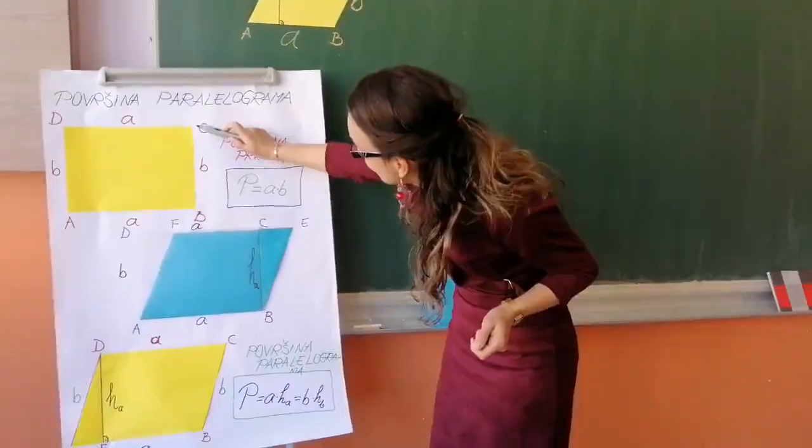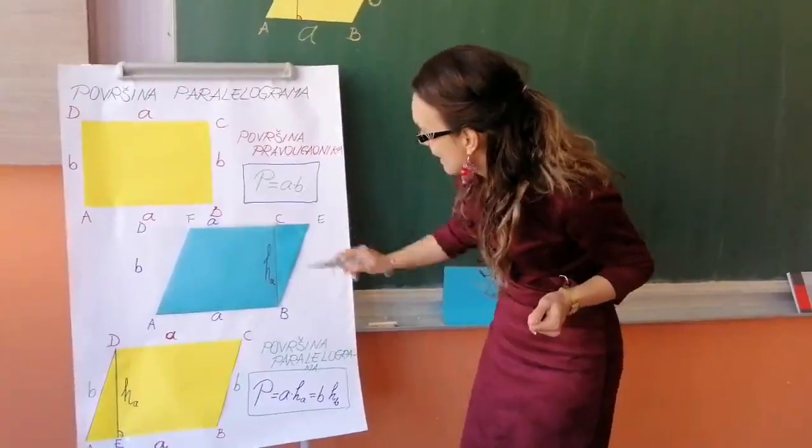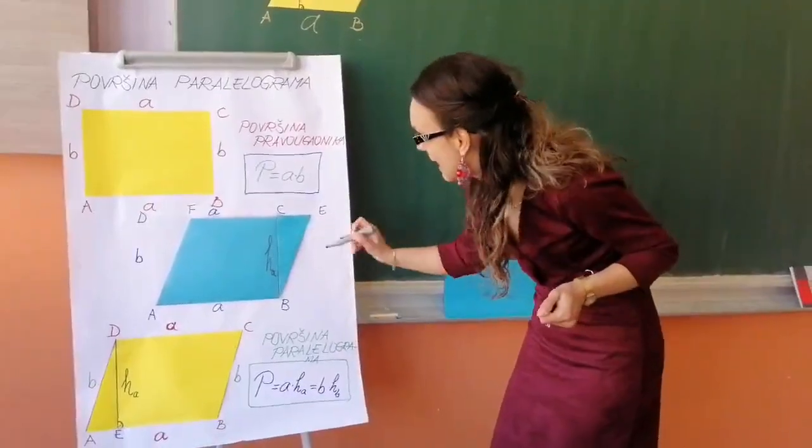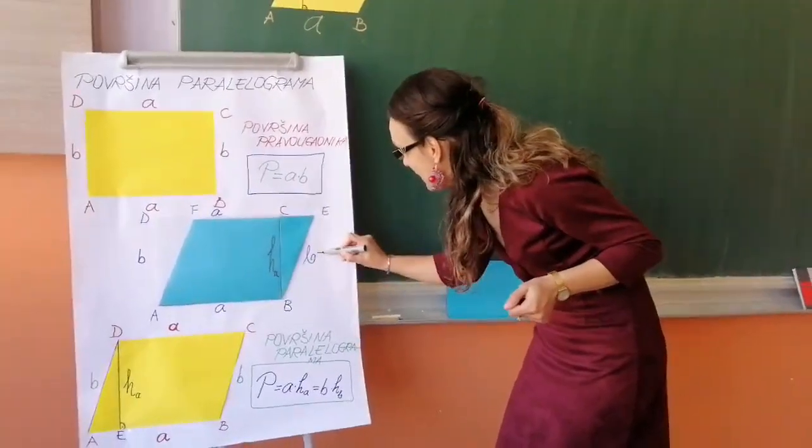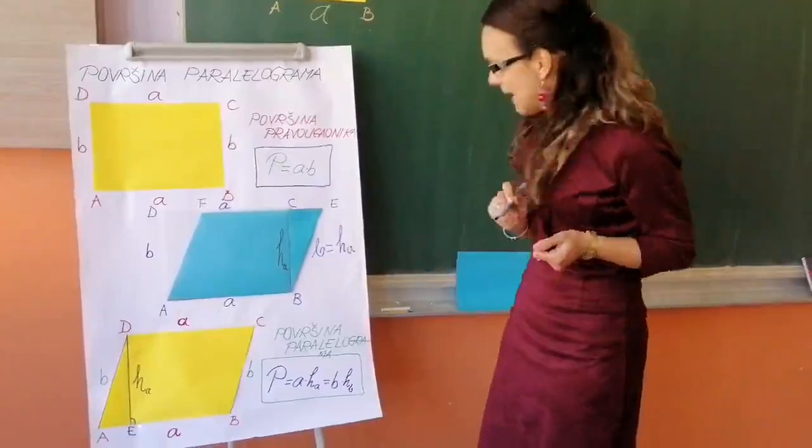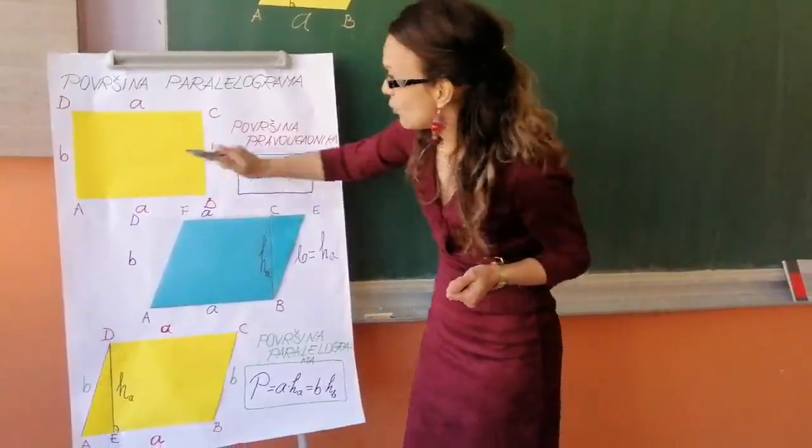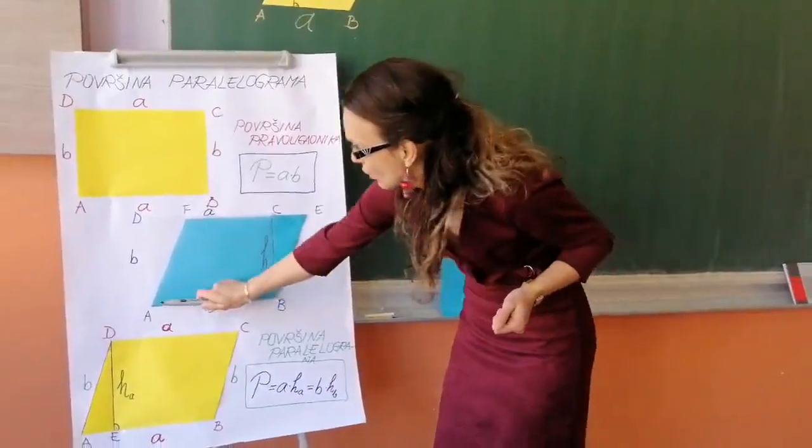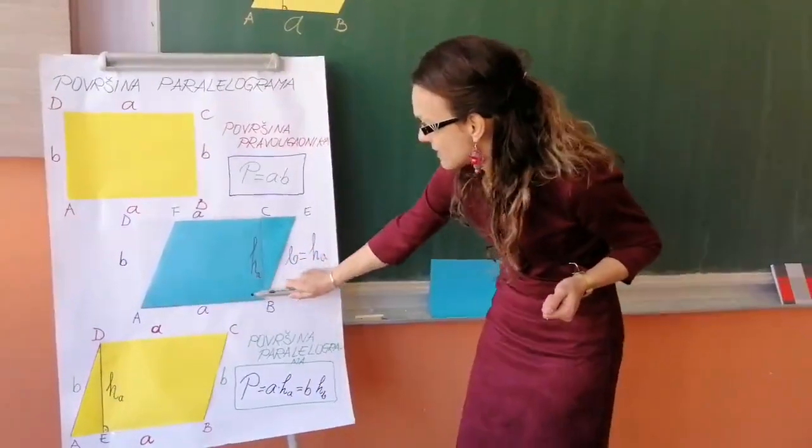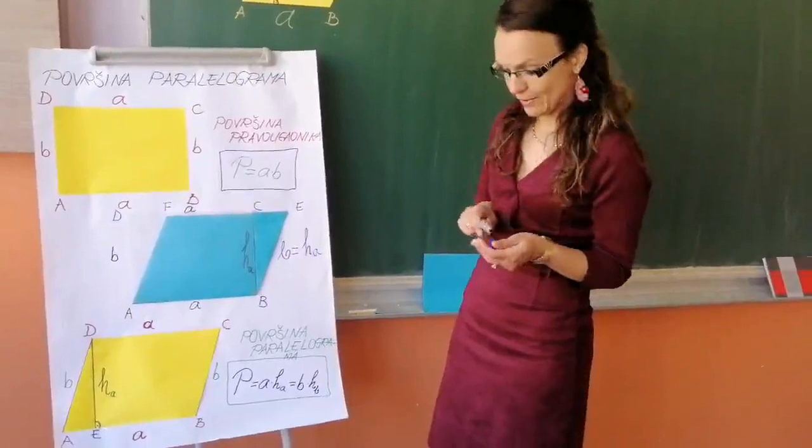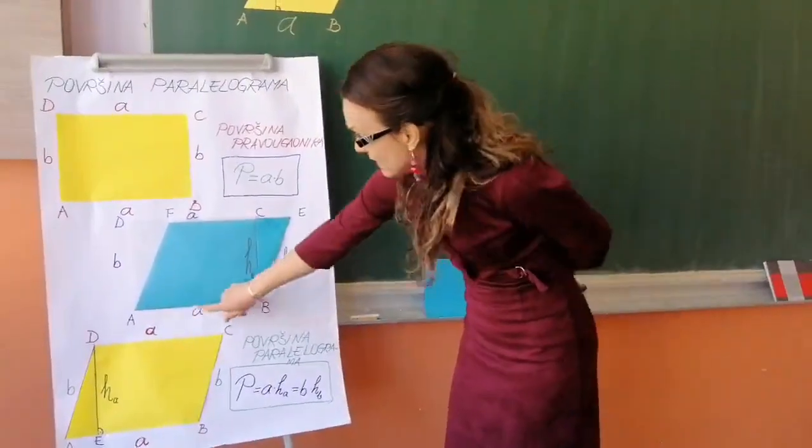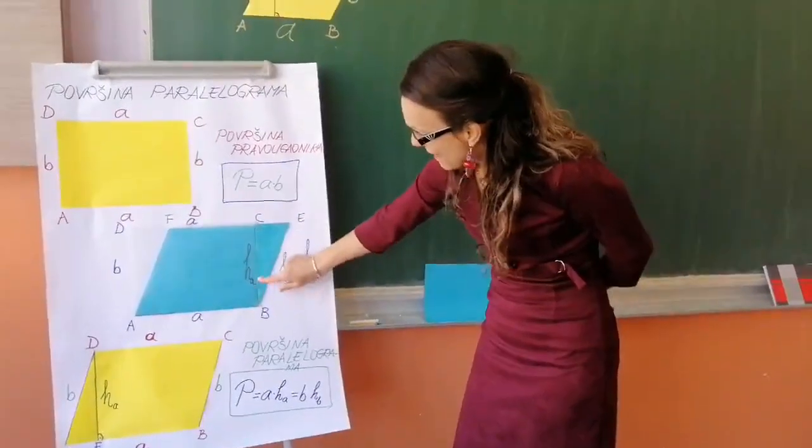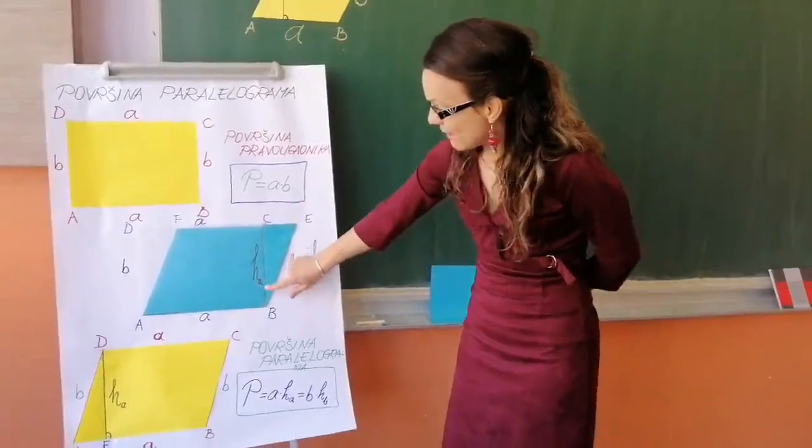Na način da stranica pravougaonika, malo B, odgovara mojoj visini ha, znači B je jednako ha, a druga stranica pravougaonika, malo A, odgovara mojoj stranici paralelograma A. Dakle, ja ovdje imam stranicu paralelograma, malo A, i visinu koja pada na tu stranicu, malo ha.